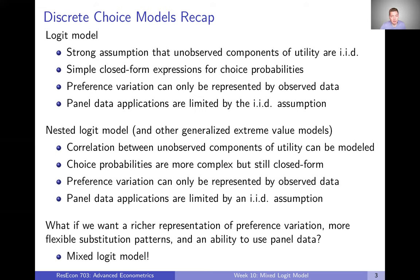But some downsides of the logit model: those assumptions created pretty rigid substitution patterns. We also have the fact that preference variation could only be represented by observed data. We talked about how the marginal utility of income could be a function of income, but we couldn't allow for variation in marginal utility of income for unobserved reasons. And panel data applications are limited because of the IID assumption — it's difficult to assume that people's choices over time aren't going to be correlated with one another.